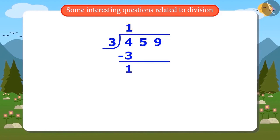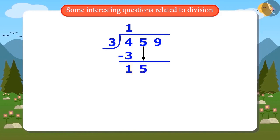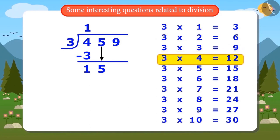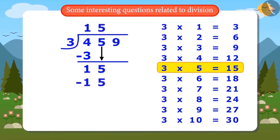I have divided the first digit. Now, the remainder which is left — we write one digit from the remaining numbers near it. The remainder is 1 and the remaining number is 59, so the first digit of 59 is written down next to 1, making the number 15. Now you have to divide 15 by 3. 3 ones are 3, 3 twos are 6, 3 threes are 9, 3 fours are 12, 3 fives are 15. So when 15 is divided by 3, the answer is 5 and the remainder is 0.